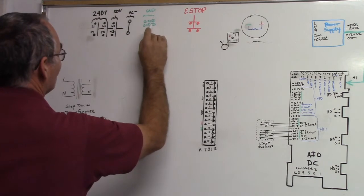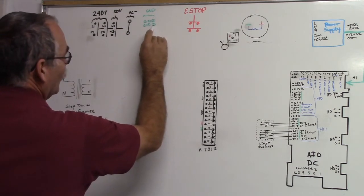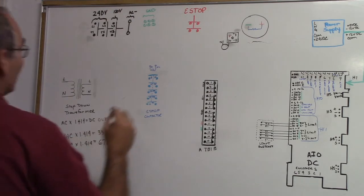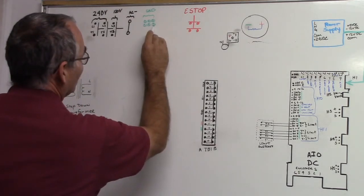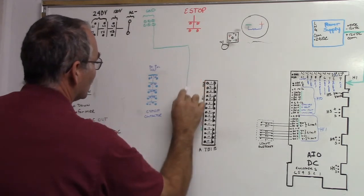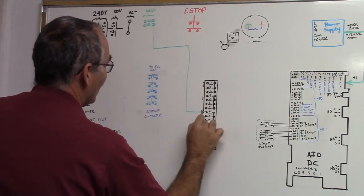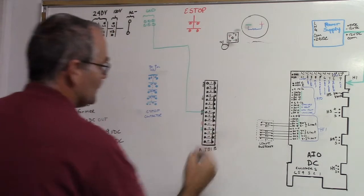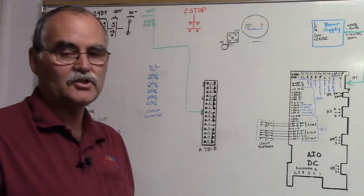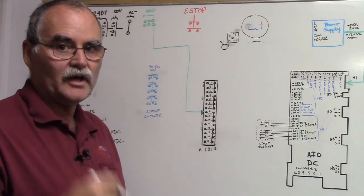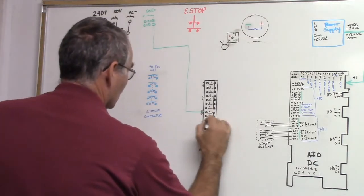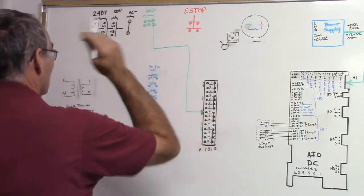So from this ground point you want to go over to TB1-8a. So it's TB1, here's our ground, we're going to come down to 8a. You notice these are all tied together, so any shields from your control cables, anything that's got a drain wire, you want to bring them all back to this point here.